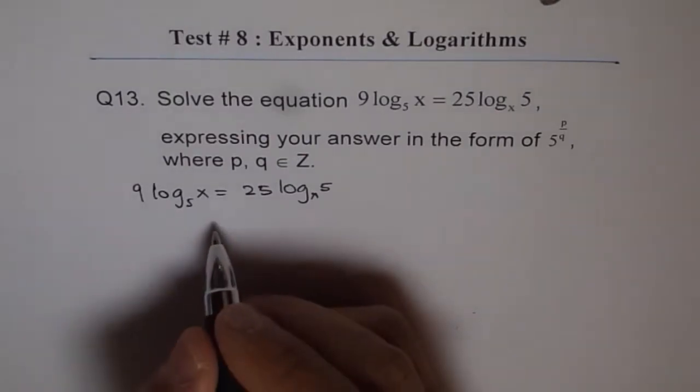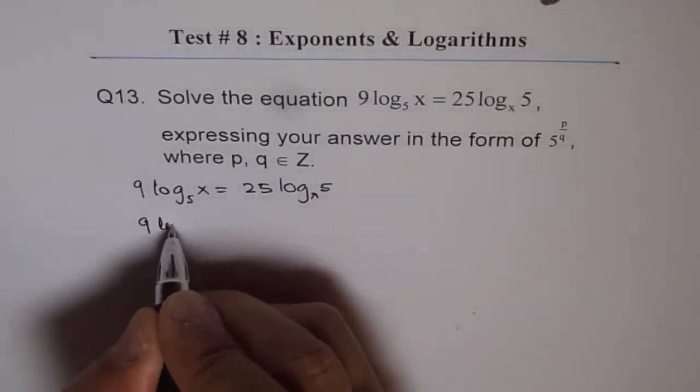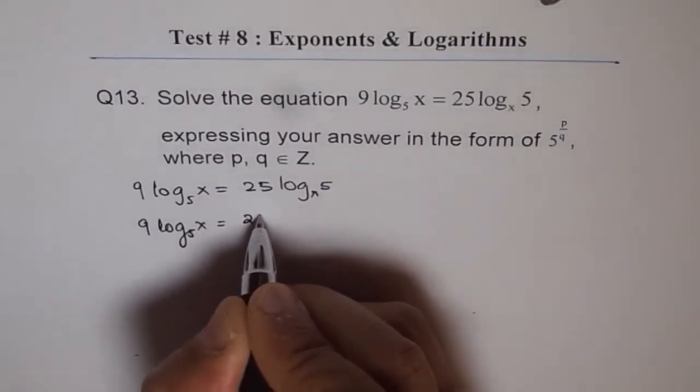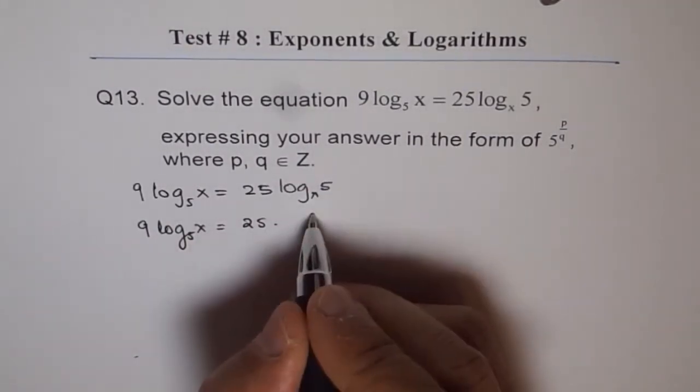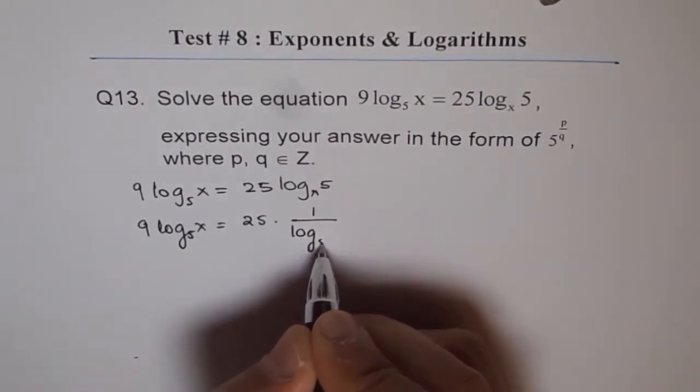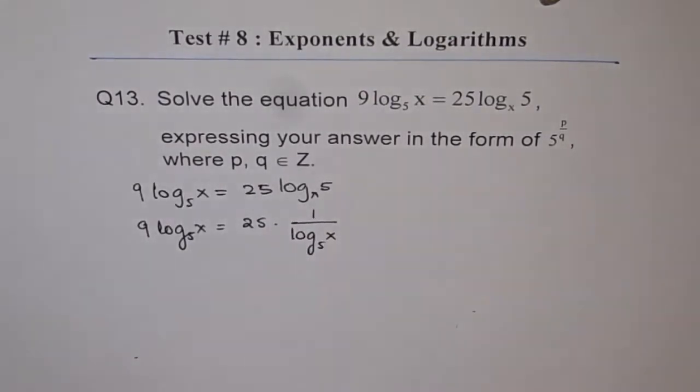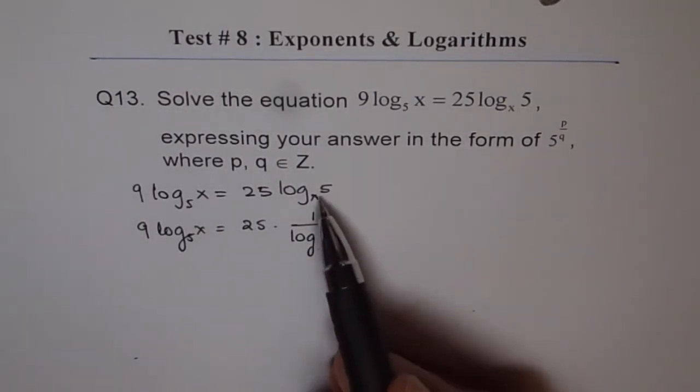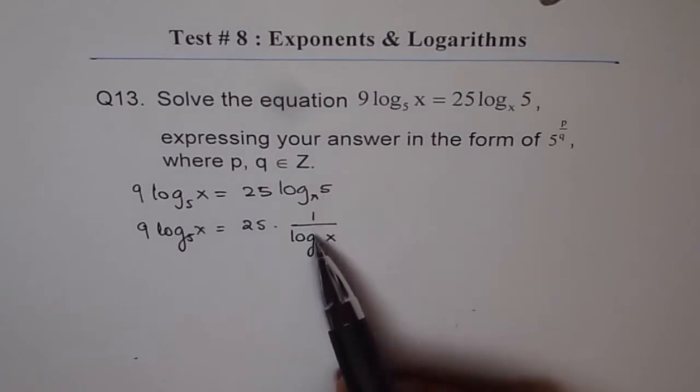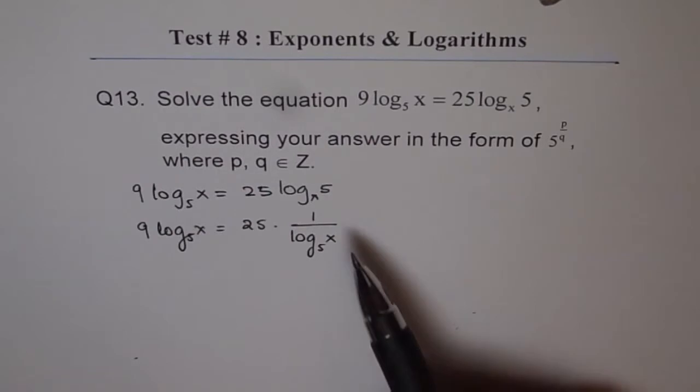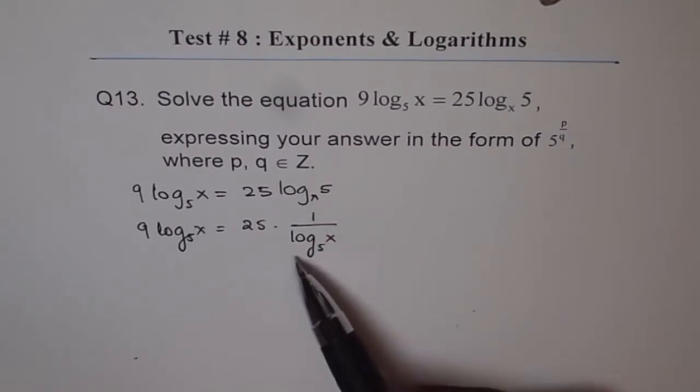Now, change of base is like this. We've got 9 log 5 of x equals to 25, and this could be written as 1 over log 5 of x. That is kind of a very critical step here. We do have a question in which I've derived this formula for you. I think it's question number 9. So you can go through that and understand how log x of 5 can be written as reciprocal 1 over log 5 of x. That's kind of crucial.